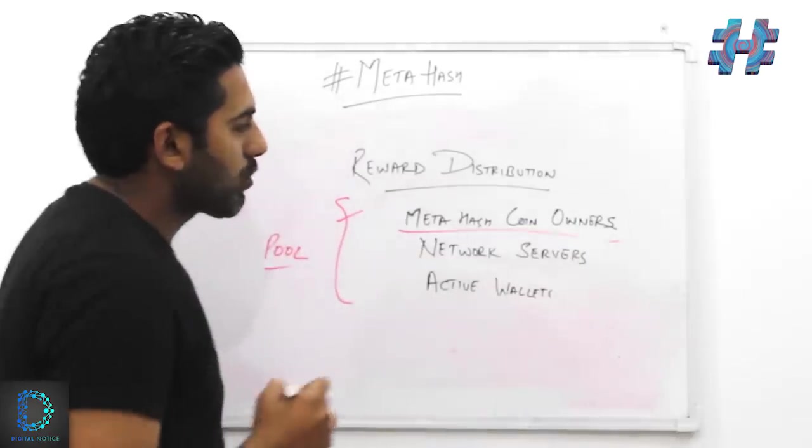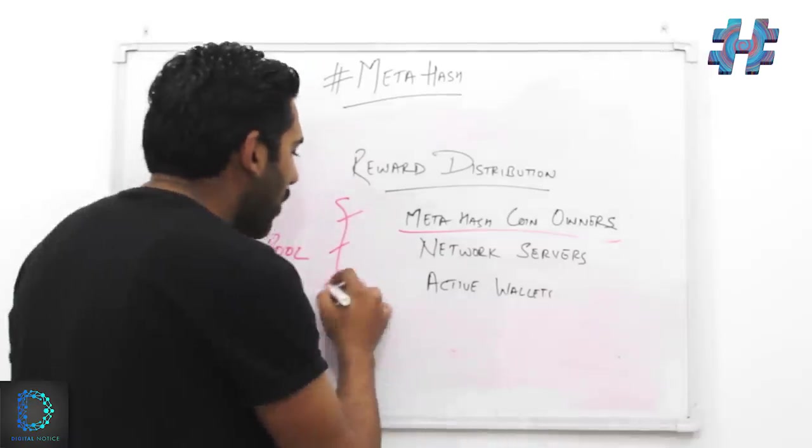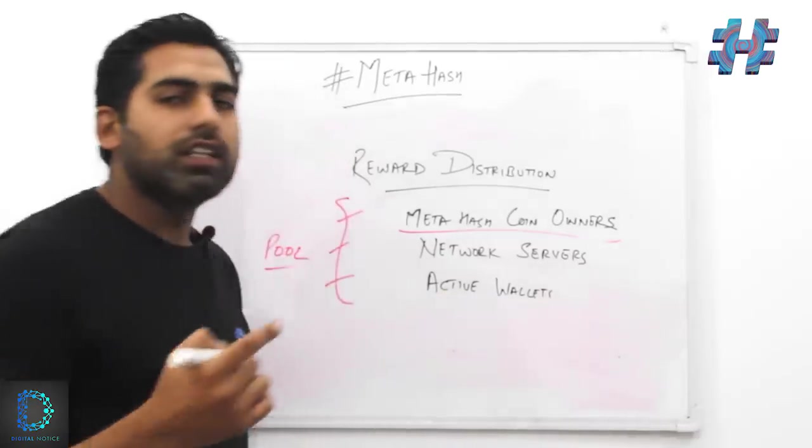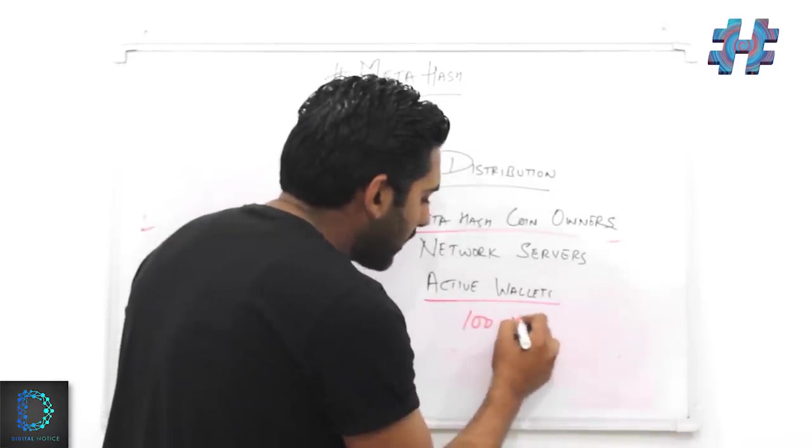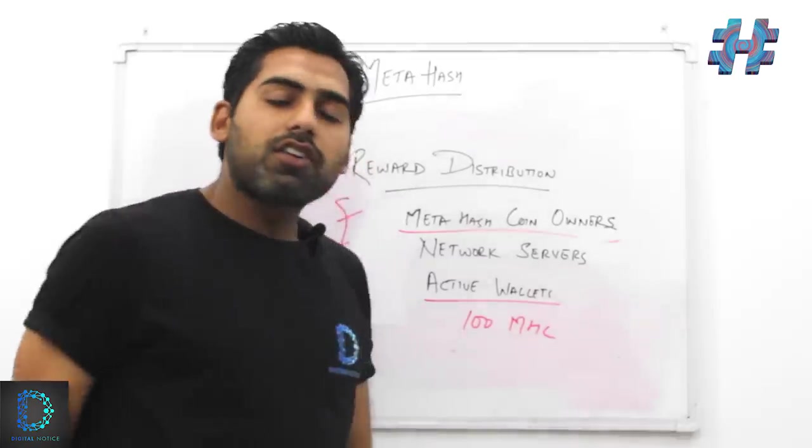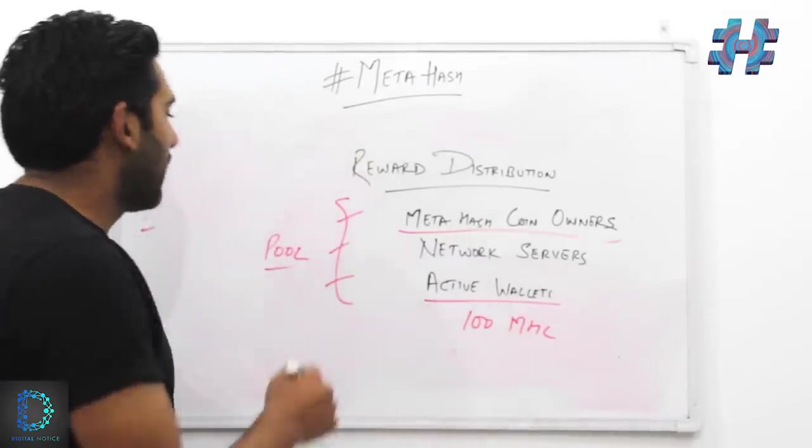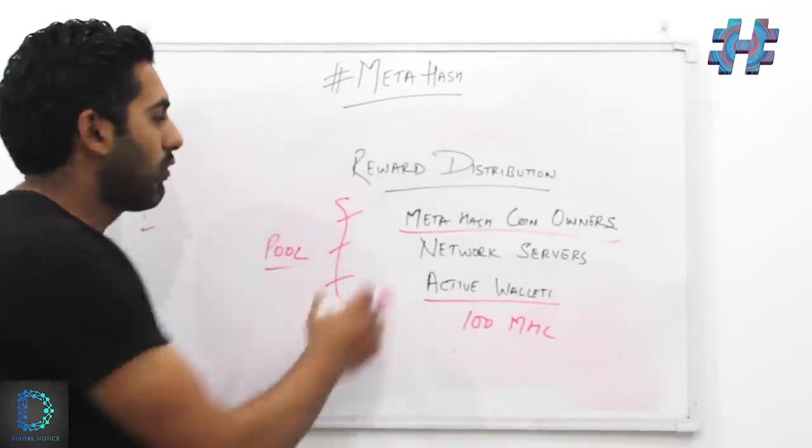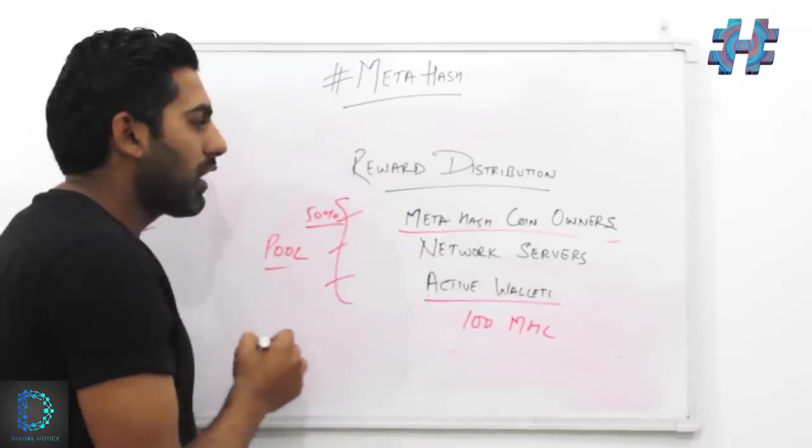MetaHash coin owners, network servers—or you can call them the nodes—and active wallets. What they consider an active wallet is at least a wallet containing a minimum of 100 MetaHash coins. That is being considered as an active wallet.